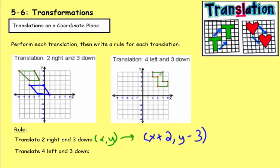Now let's translate an object with many points — we need to move it four to the left and three down. Starting at the top right, we move each point four left and three down. After plotting all the new points and connecting them, the shape has been translated four left and three down.